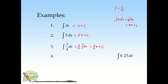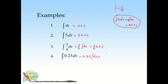For the integral of 0.25·dx, the constant is 0.25. You isolate this and take the integral of dx. So the result is 0.25x + C.